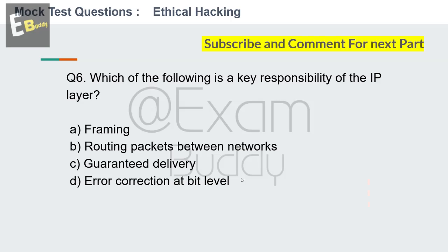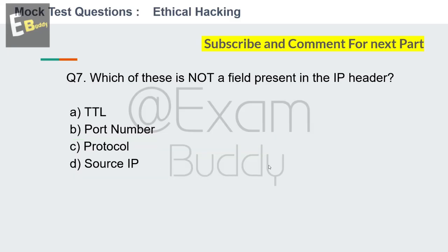The answer is B: routing packets between networks. Now question number 7: Which of these is not a field present in the IP header? Options: TTL, port number, protocol, source IP. Your time starts now.